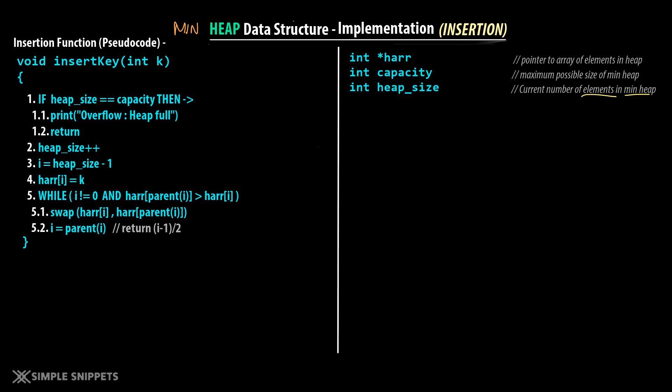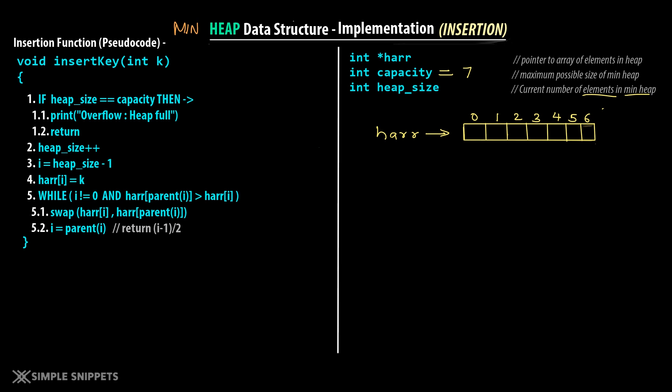When inserting a value via insert key, we pass the value as argument k. Let's say the capacity of our heap taken from the user is 7 — so in memory, an array harray of size 7 is created with indexes 0 to 6. Currently heap size is 0 because when we create the heap it is empty, and heap size tracks the number of elements in the min heap. So heap size starts at 0. Let's insert k equal to 5.